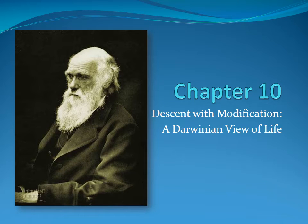Descent with Modification — a Darwinian view of life. This video will go over some of the theories that predated Charles Darwin and his theory of evolution by natural selection. It will also briefly discuss his journeys in the Galapagos Islands and what he discovered. You can see the picture is the man with the evolutionary plan, Charles Darwin.